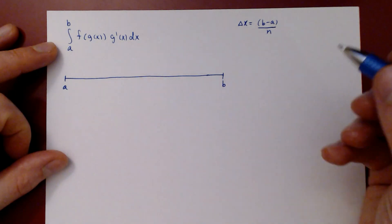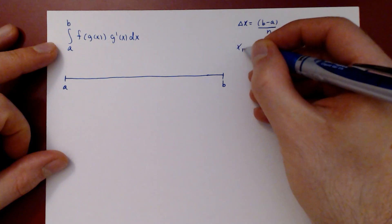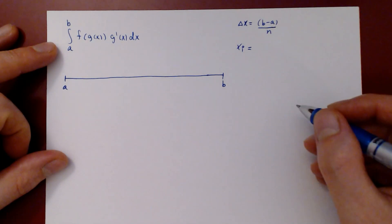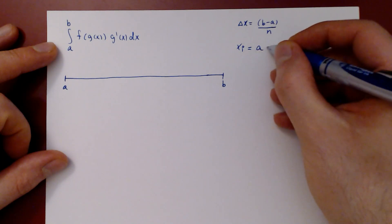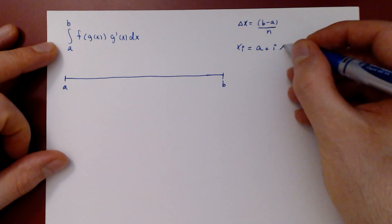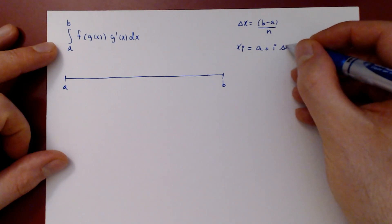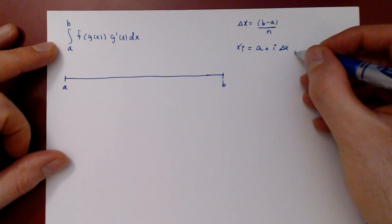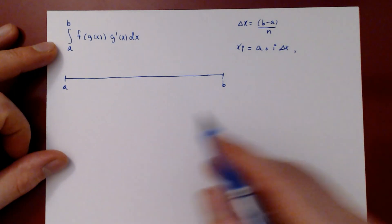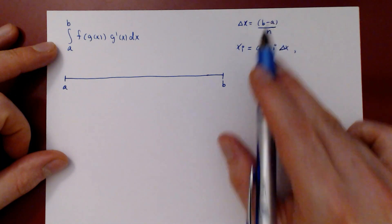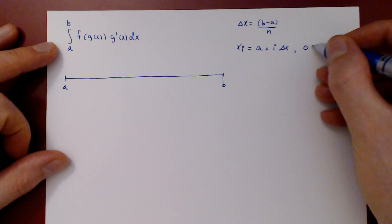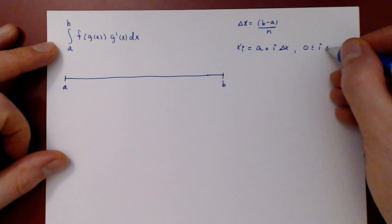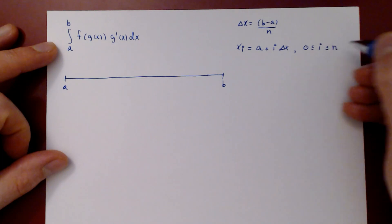Then x_i, the i-th point of our partition, will be given by a plus i times delta x, where i ranges from 0, giving us x_0 = a, up to n, giving us x_n = b.